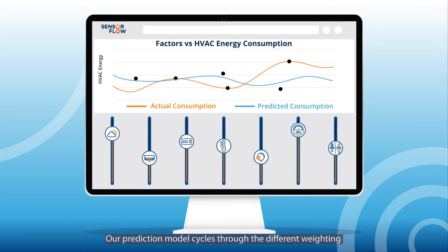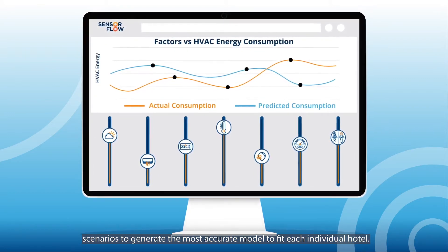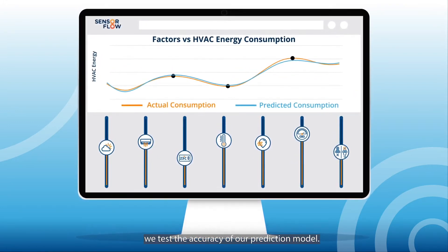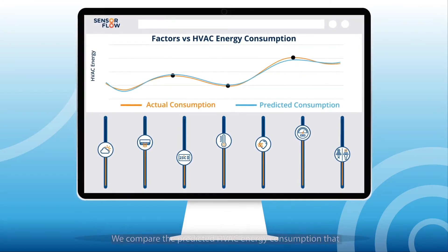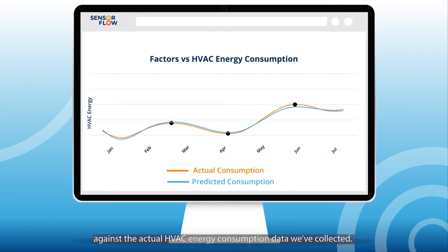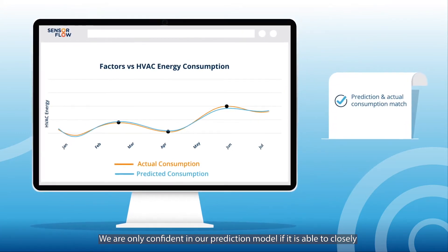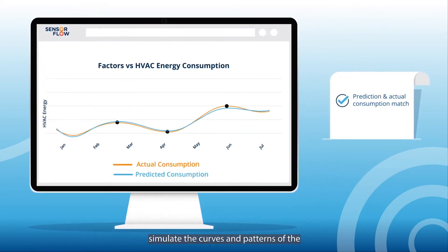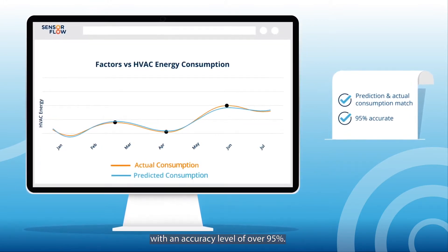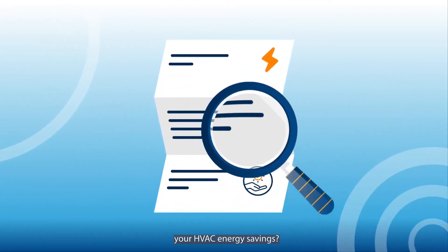Our prediction model cycles through the different weighting scenarios to generate the most accurate model to fit each individual hotel. Once we've found a model that we think fits, we test the accuracy of our prediction model. We compare the predicted HVAC energy consumption that the model has created against the actual HVAC energy consumption data we've collected. We are only confident in our prediction model if it is able to closely simulate the curves and patterns of the actual HVAC energy consumption with an accuracy level of over 95%.